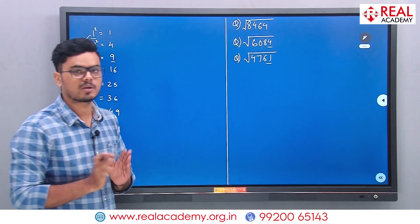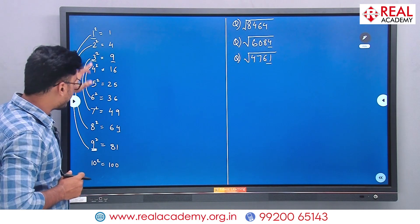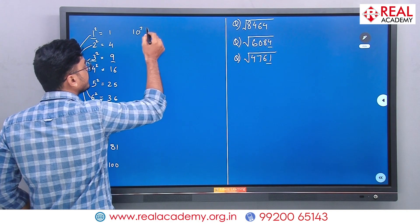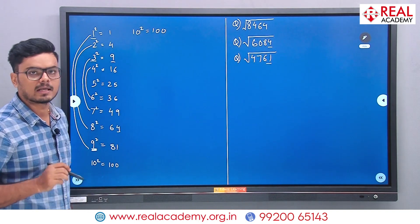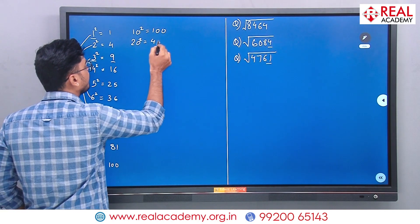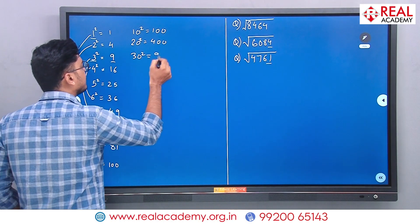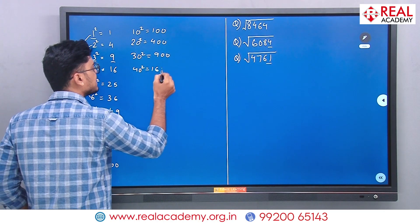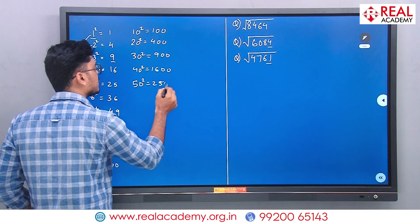Now let us see how to find the square root. If I know the squares of 1 to 10, I can easily find squares of multiples of 10 — just append two zeros. 10 squared is 100. 20 squared is 400. 30 squared is 900. 40 squared is 1600. 50 squared is 2500.